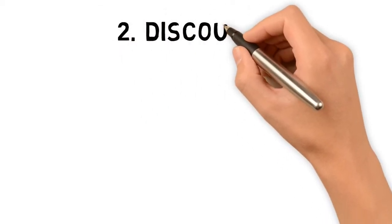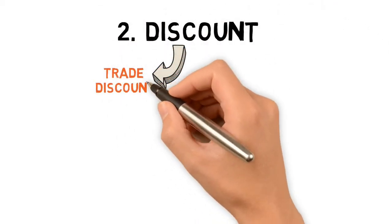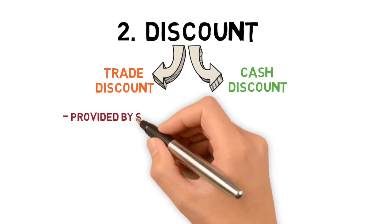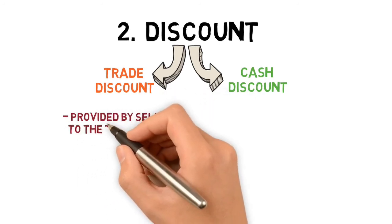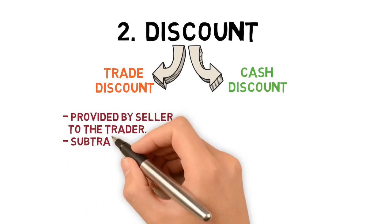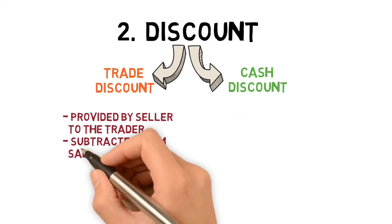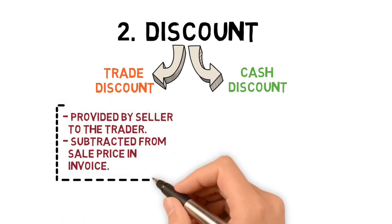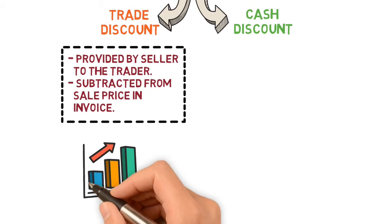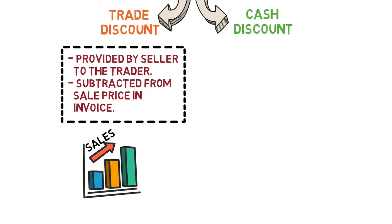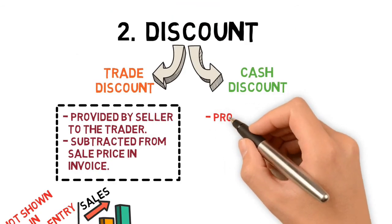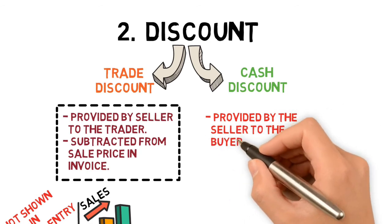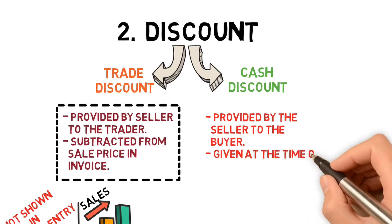Now we move on to the second common mistake related to discount. Discount can be of two types: trade discount and cash discount. Trade discount is basically given by the seller to traders — people who purchase goods and then sell them for a profit. Trade discount is given at the time of preparing the sales invoice; it is subtracted from the list price. The purpose is to increase sales, and trade discount is never shown in the journal entries.